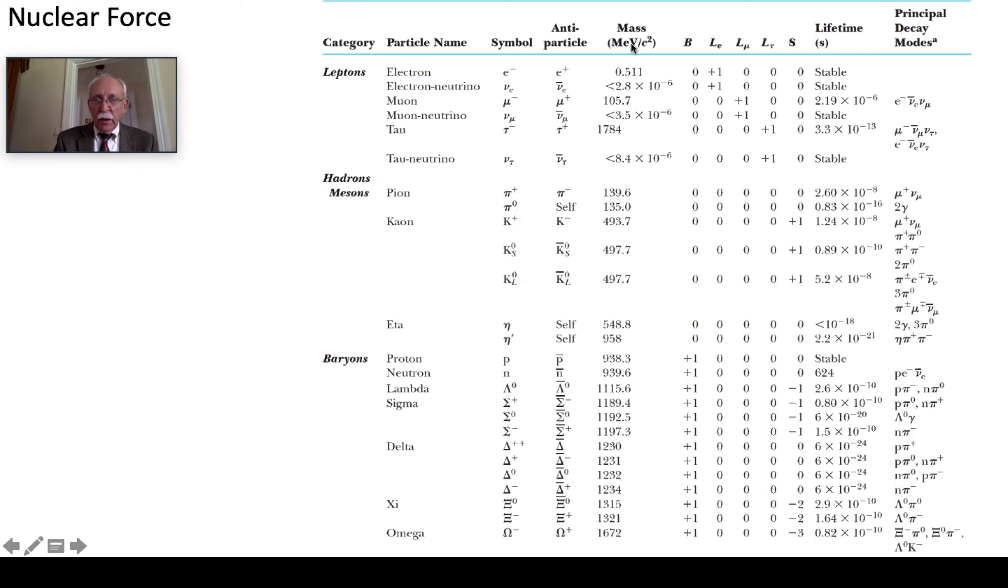So we've got masses here and these are in MeVs so you can see that a number of these heavier ones which are all called baryons are no less than the proton. The proton is the lightweight one in this group. And if you go to the mesons remember the mesons were named as having a mass intermediate between a proton and electron.